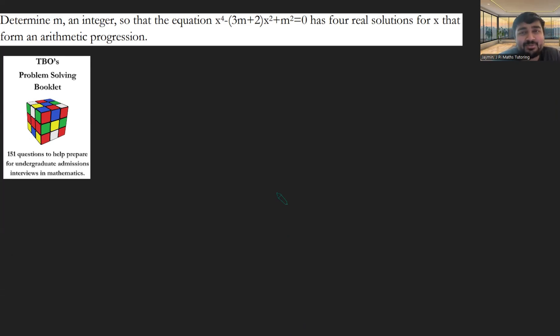Today I've got a really fun problem from TVO's problem-solving booklet. This is designed for students who are looking to prepare for their Oxford and Cambridge mathematics interviews. I know some of you have your Oxford interviews this week, some of my students certainly do, so best of luck if you're one of them. We want to determine m, an integer, so that the equation x^4 - 3m + 2x^2 + m^2 = 0 has four real solutions for x that form an arithmetic progression.